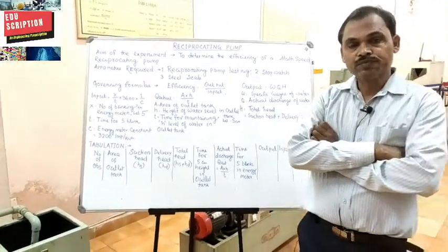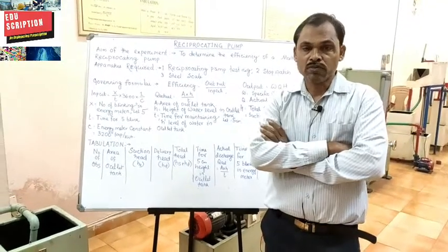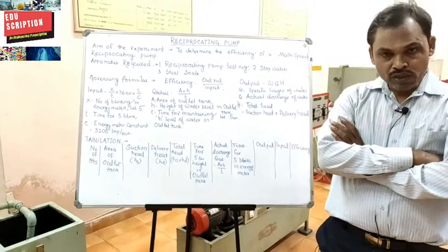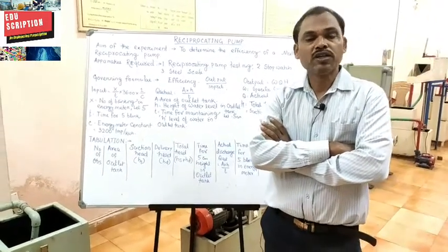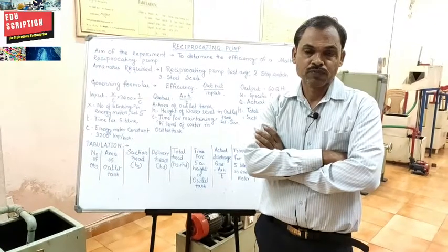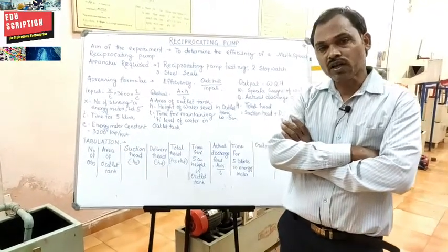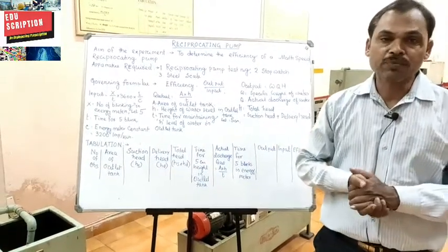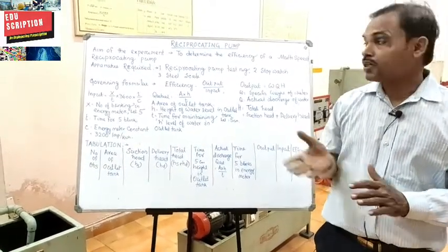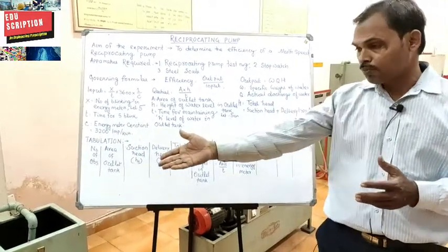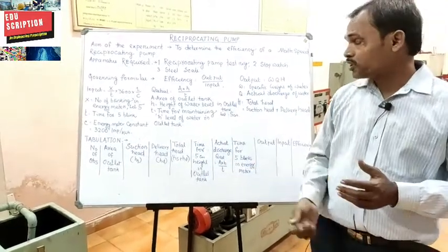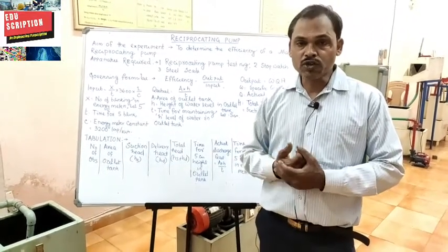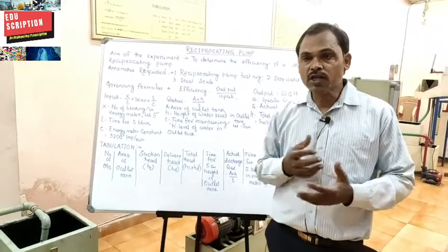Welcome, my dear student. Today we go for the second experiment, that is the reciprocating pump. First of all, the aim of the experiment: to determine the efficiency of a reciprocating pump. The apparatus required: reciprocating pump test rig, stopwatch, and measuring scale.